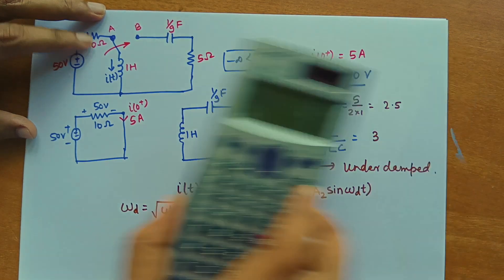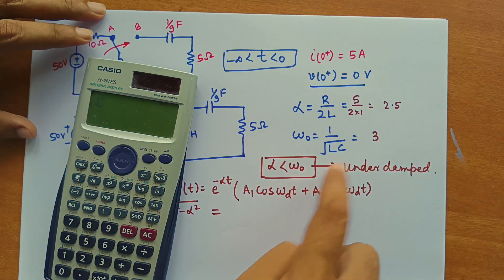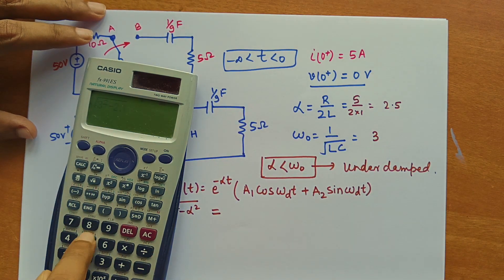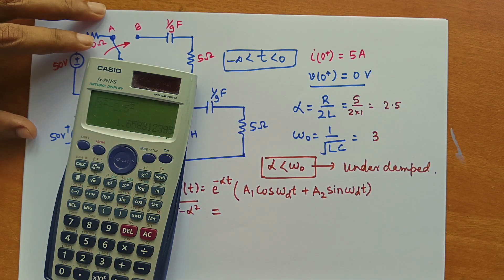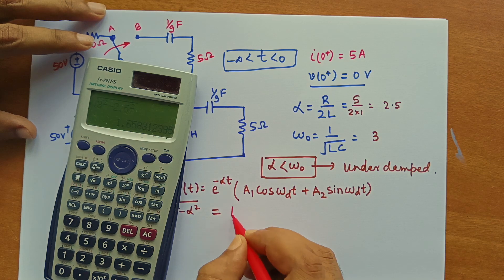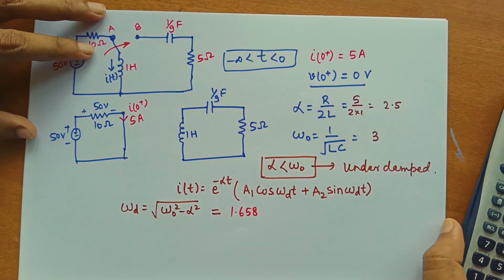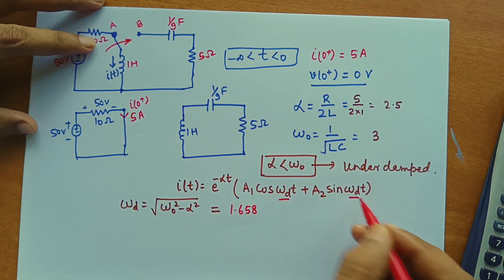Then calculate this. So what we will get omega 0 square 3 square minus 2.5 square. This value is 1.658. 1.658. Omega d is 1.658. So here we have got these values. Alpha is already known.